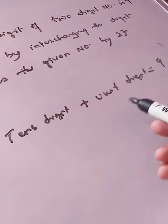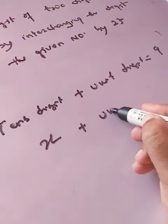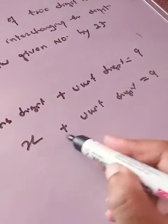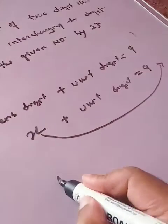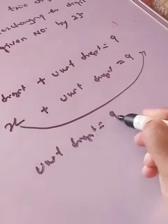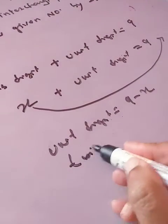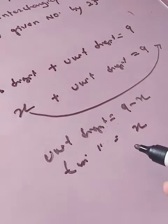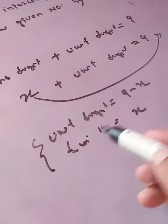We are not aware of either digit, so suppose we take the tens digit as x. Then what will be the unit digit? X will transpose to the other side, so unit digit will be 9 minus x. So tens digit is x and unit digit is 9 minus x.